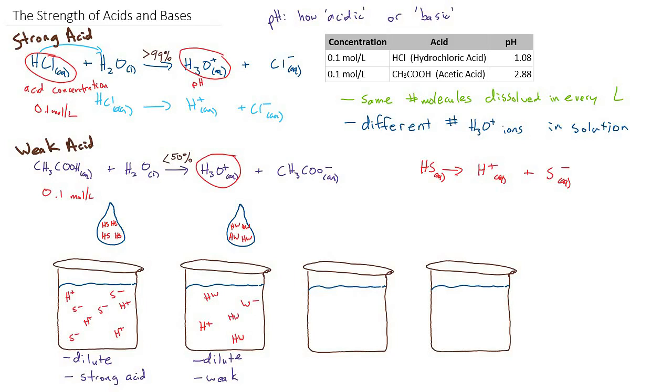And now we can see why this solution will have a lower pH, because pH depends on the number of hydrogen ions, or hydronium ions, and this solution has a lot fewer of them, even though the acid concentration was the same. We put four molecules into both beakers.